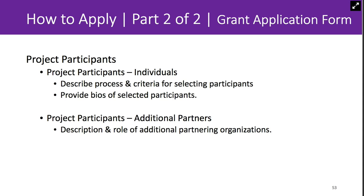Next, you'll describe project participants—key individuals who will be responsible for carrying out project activities. You'll provide a brief bio and describe their relevant experience. Also in this section, you can tell us about additional partners beyond the primary partnership, such as other nonprofit organizations, local businesses, neighborhood organizations, institutions of higher learning, etc., that are going to be collaborating with you in this effort. You may include up to 10 additional partners.